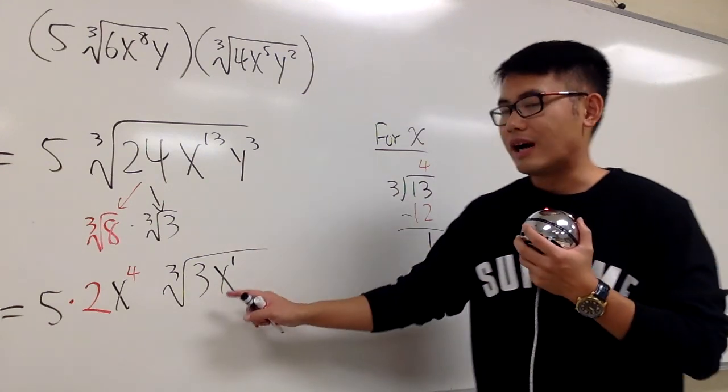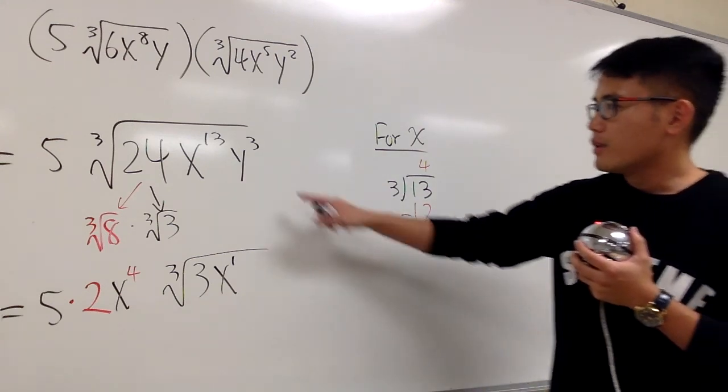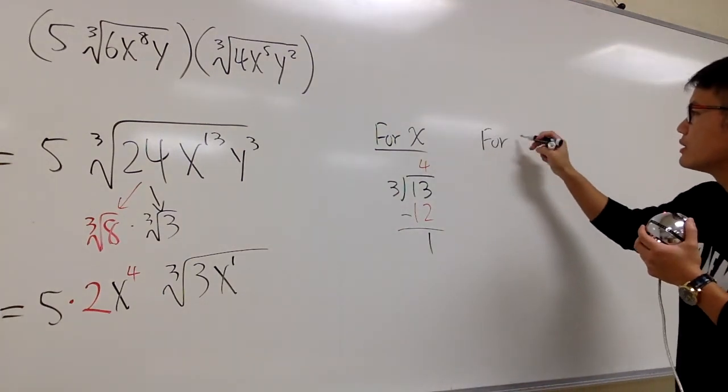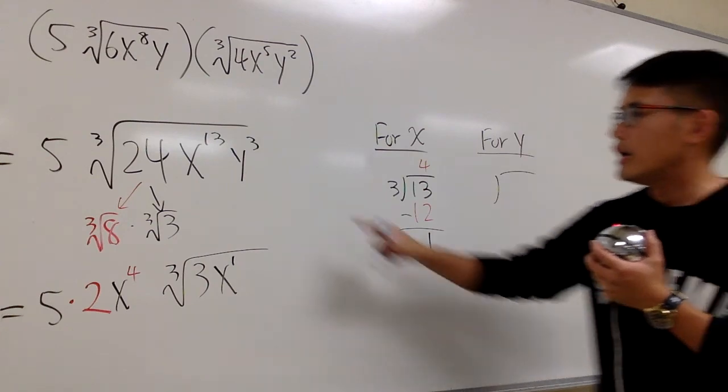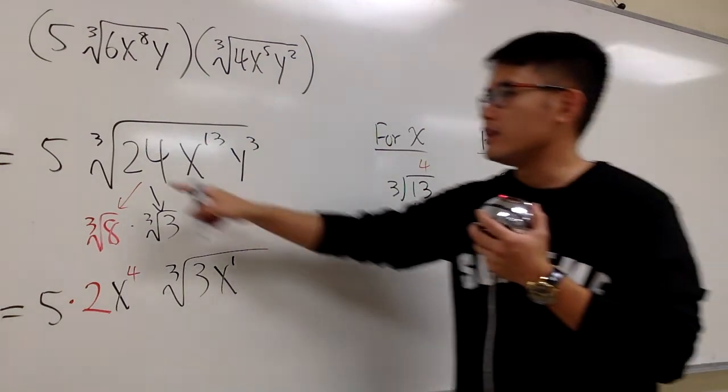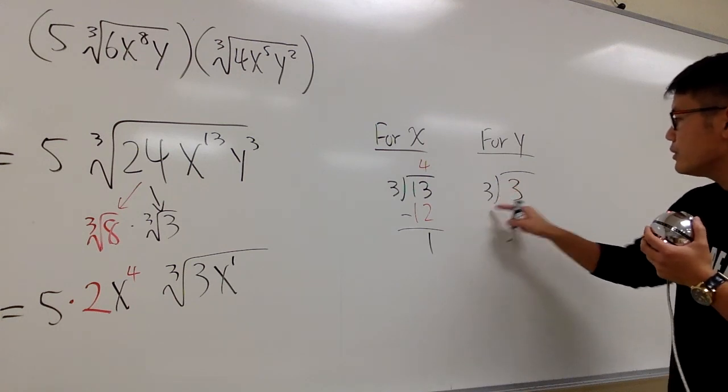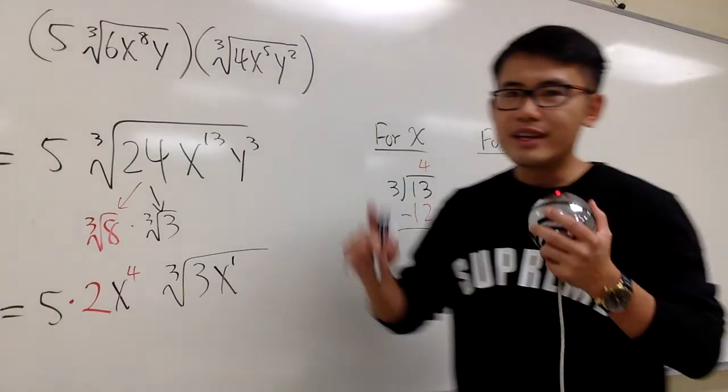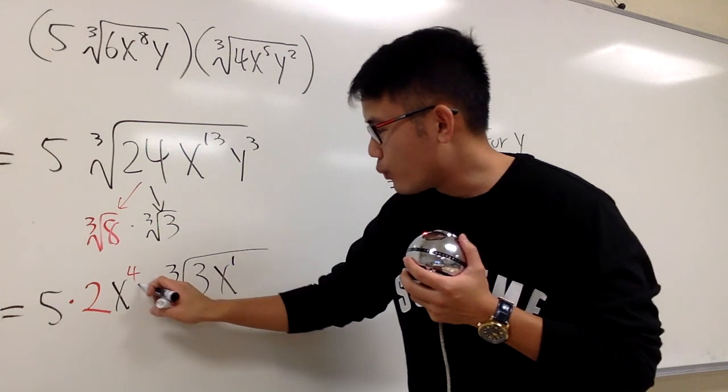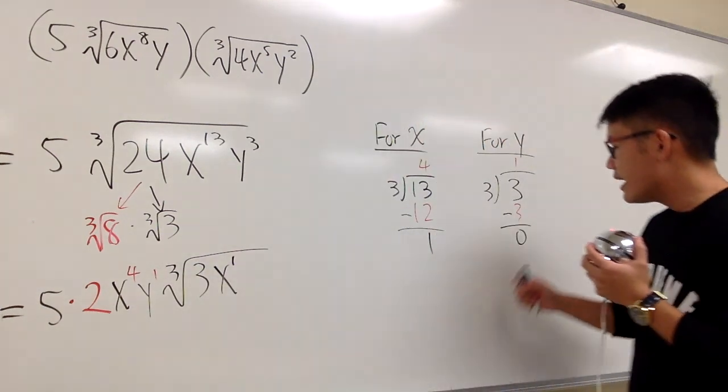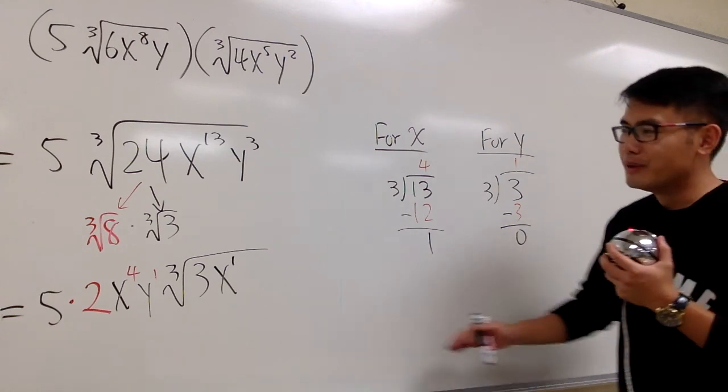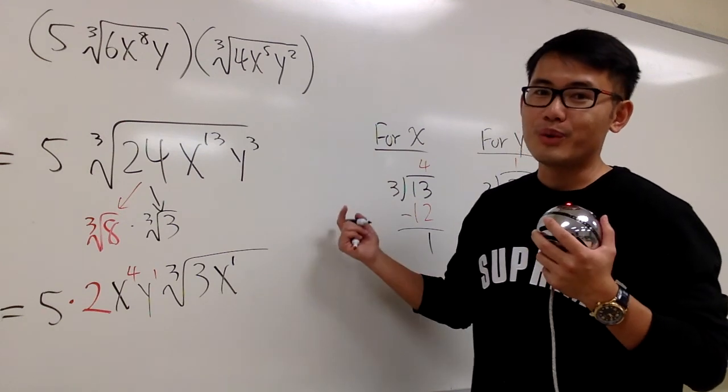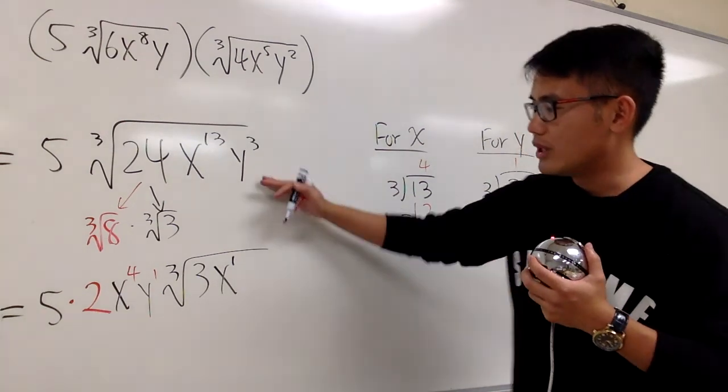At the end, we do this for y to the 3rd power inside of the cube root. Let me demonstrate we can use long division here. I'm going to divide it by the index, which is 3. 3 goes into 3 exactly one time. 1 times 3 is 3, subtract, you get 0. This one tells us that we can take out one y outside, so we have y to the 1st power. We have 0y inside, no more y inside. Zero remainder means we have no more y inside.